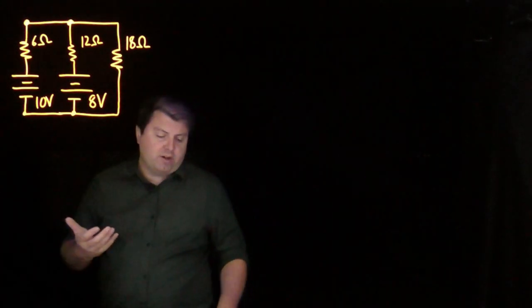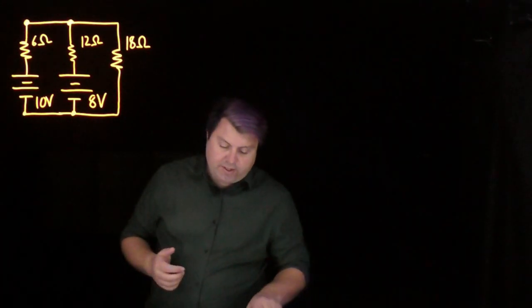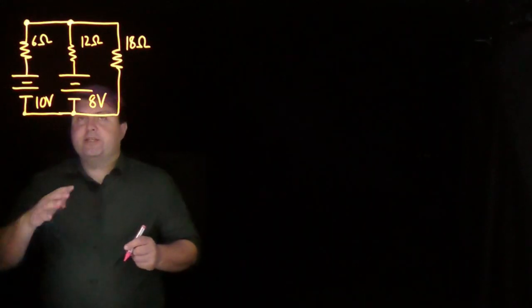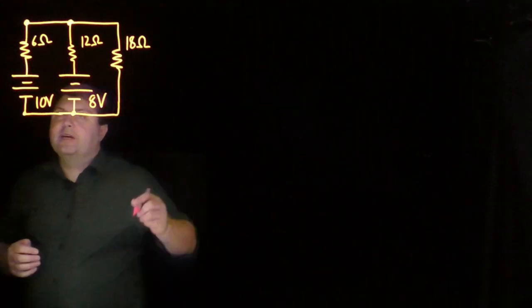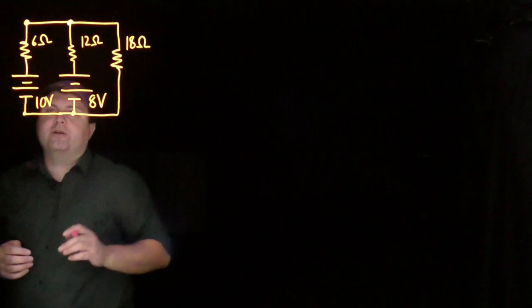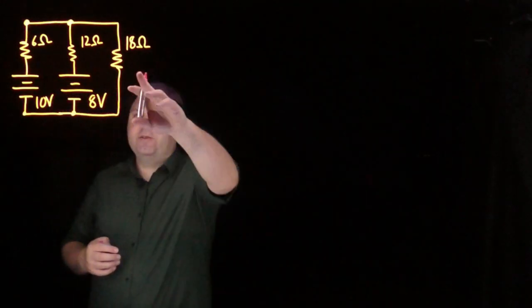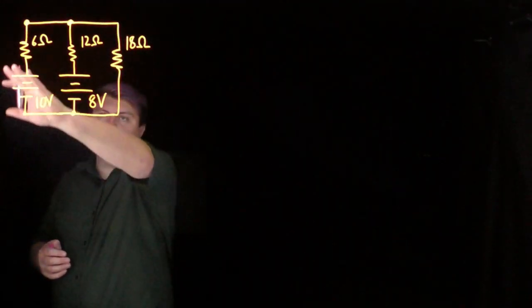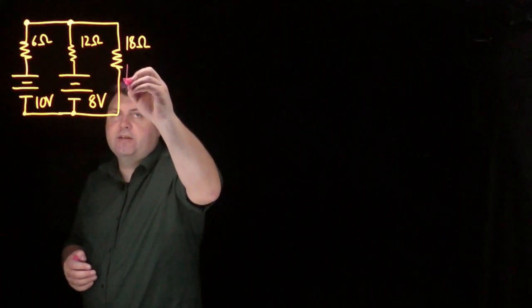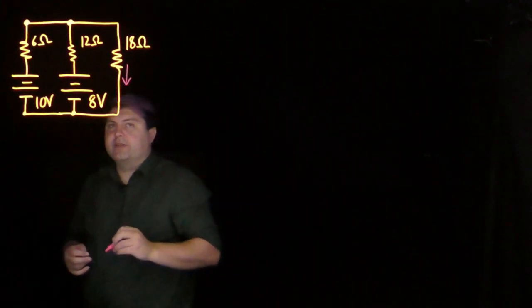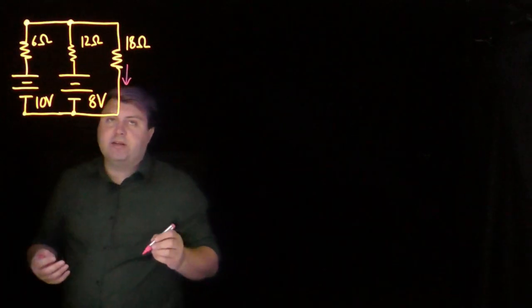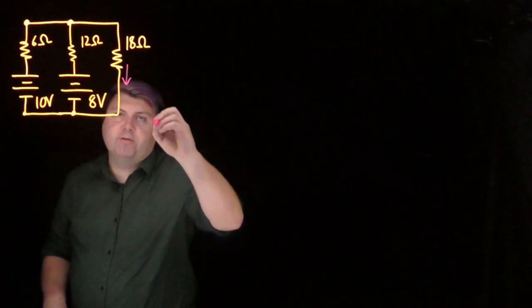We have to use Kirchhoff's rules in full. So the first thing that we do in our sketch step after drawing this circuit is to guess the current for all of these. For this 18 ohm resistor we've got a general guess that it's going to be moving like this, so we will guess it's going in this direction. We have to make this guess, and we have to guess a direction, we also just have to label it.